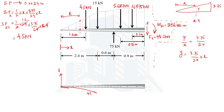At x = 2.4 m, there is also a 15 kN point load acting downward. Since we move downward by 15 kN, the total shear force at that point becomes 4.5 + 15 = 19.5 kN (negative). So the shear force diagram shows a jump at x = 2.4 m, reaching a magnitude of 19.5 kN.